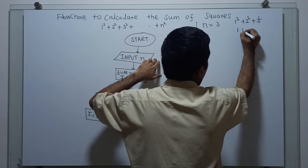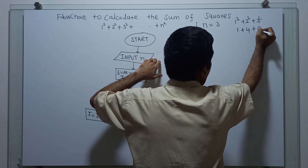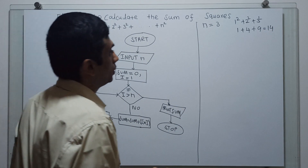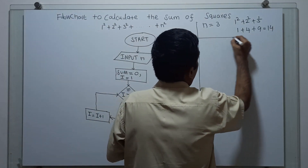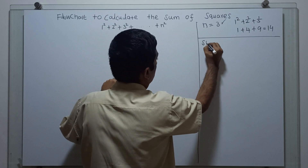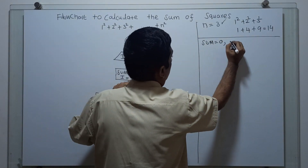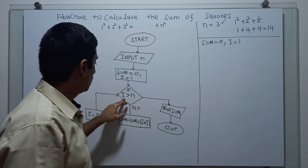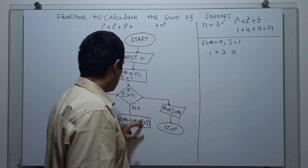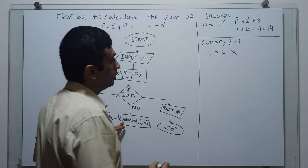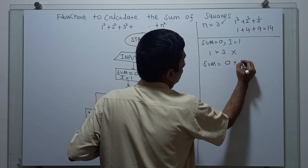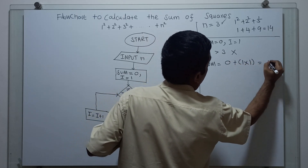The actual value is: 1 square is 1, 2 square is 4, 3 square is 9. So 1 plus 4 is 5, and 5 plus 9 equals 14. Now tracing: n=3, sum=0, i=1. Check 1 greater than 3 — which is false, so no. Sum equals 0 plus 1 star 1, which equals 1.